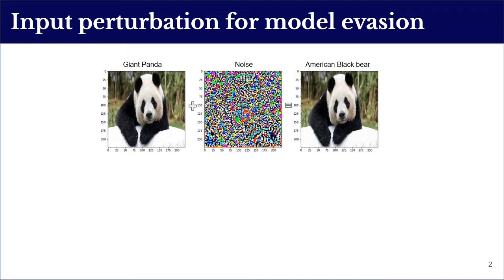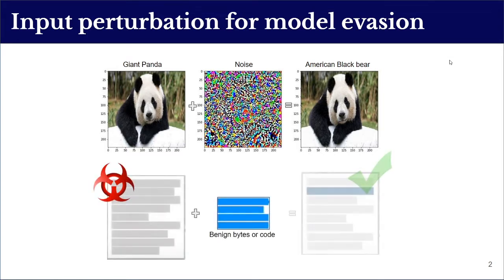For example, a giant panda can be misclassified as a black bear if an adversary adds studied noise to the input image. Such observations have raised questions about the security and trustworthiness of machine learning models, especially in sensitive domains such as self-driving cars. The same vulnerability is observed in machine learning malware detectors — prior works have shown that adding bytes or code to a malicious file can cause it to be misclassified as benign.